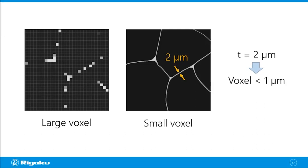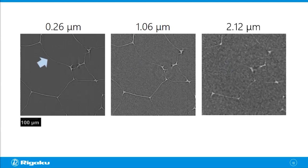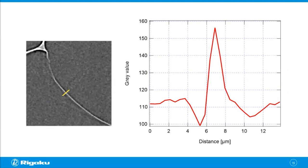Let's look at actual CT cross-sections to see what happens if the voxel size is too large. This is a cross-section of a foam material collected at 2.12 micron voxel size. There should be a polymer wall separating two cells, but you can't even see that it's there. If you use about one micron voxel size, you can kind of see a little line. If you go down to about a quarter micron, you can clearly see the polymer wall between two cells, and you can even measure the thickness — which turned out to be 1.9 microns. At two micron voxel size, you miss it entirely.